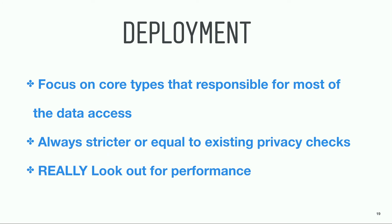Deploying privacy-related changes is always risky because we could never have unit tests that cover all privacy scenarios. Let me share lessons learned along the way. First, focus on the core types. With any content sharing application, users and content are probably responsible for most data access and privacy issues. On Instagram, we started with user, media, and comment. The existing types already had privacy checks scattered around the code base, so the first set of privacy rules were based on existing logic. During deployment, we kept the existing code to make sure the privacy check was only stricter or equal to the existing ones — we logged, compared, and made changes until there was no discrepancy.